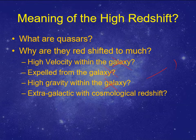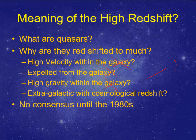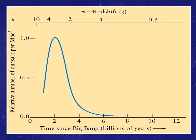So they must be something really far away. But if they're that far away, to be visible they have to be super bright. They were arguing continuously about what these things were until the 1980s, and that's when they finally decided that quasars really are objects that are super far away.